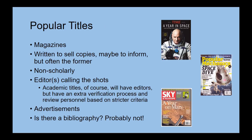If something is considered popular or non-scholarly, it is often in the magazine category. These are titles written primarily to sell copies, entertain the reader, and perhaps inform them along the way. Look at the author's credentials as well. The articles within these titles are written by journalists who may or may not be subject matter experts, and they answer to an editor who is calling the shots on what gets published. While most academic titles also have an editor, the popular titles don't require the articles submitted by these journalists to be fact-checked by multiple subject experts — and that's a key part of this evaluation process. These popular publications also will have a number of advertisements throughout, so if you see several ads, you're almost assuredly reading a non-academic article.